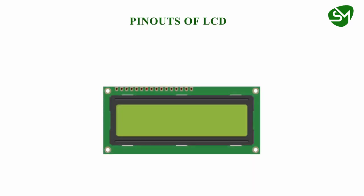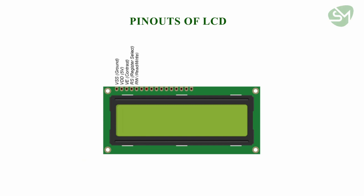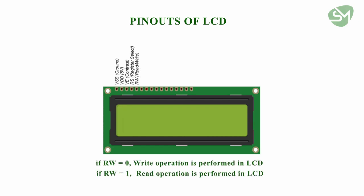The pinouts of the LCD are: the first pin is VSS which is the ground pin; the second pin is VDD which is 5 volts; the third pin is VEE which is used for varying the contrast of the display elements; the fourth pin is RS (register select) which is used for passing data to either the instruction register or the data register — if RS is 0, data is passed to the data register, and if RS is 1, data is passed to the instruction register. The fifth pin is RW (read/write), which selects whether we are reading from or writing to the LCD — if RW is 0, a write operation is performed, and if RW is 1, a read operation is performed.